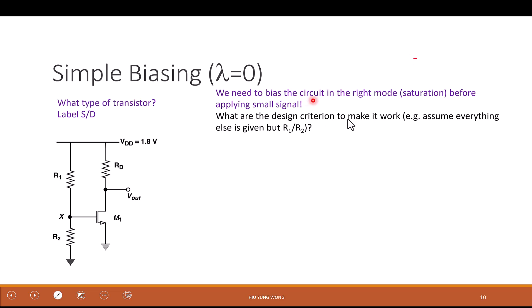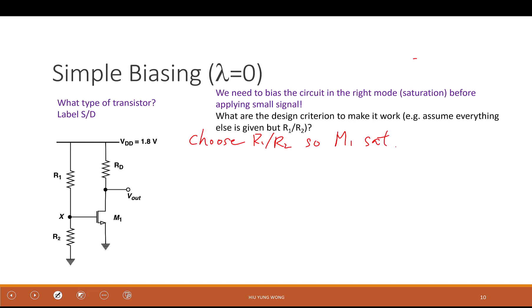We want to bias the circuit in saturation before we apply the small signal, because if it is not in saturation you're not going to get a good gain. So assume that D is already given, and we don't know what ratio R1 divided by R2 we should choose. The goal is to find R1/R2 so that M1 is in saturation. The meaning of saturation — look at the cheat sheet — is that vgs minus vt needs to be less than vds.